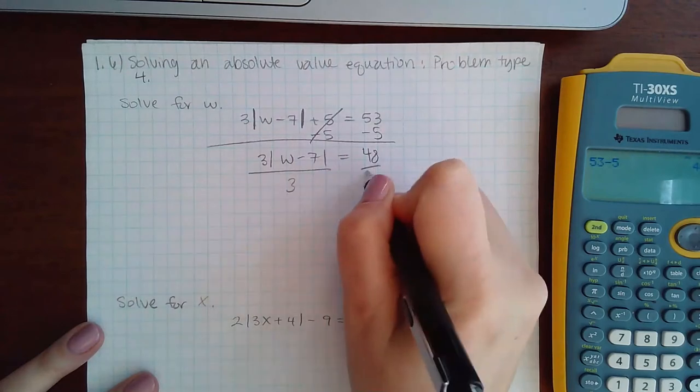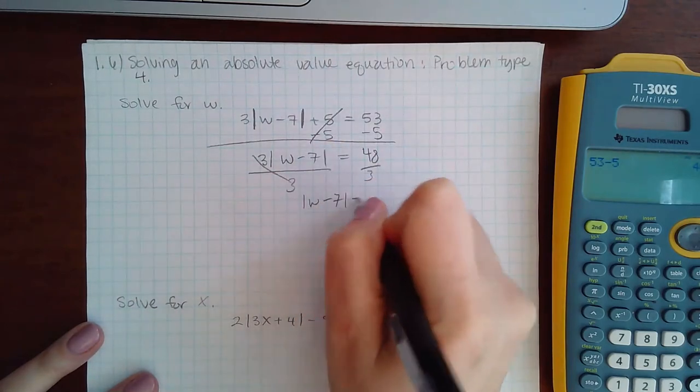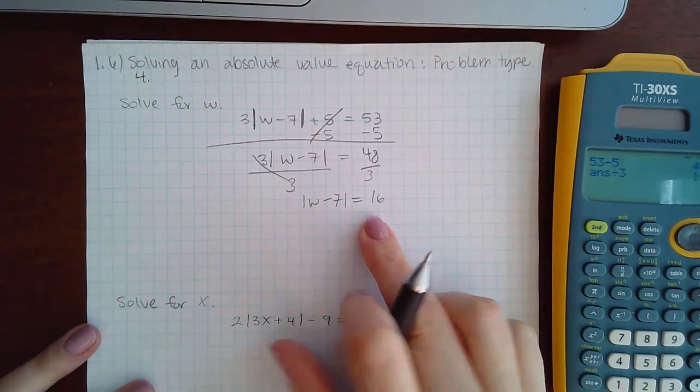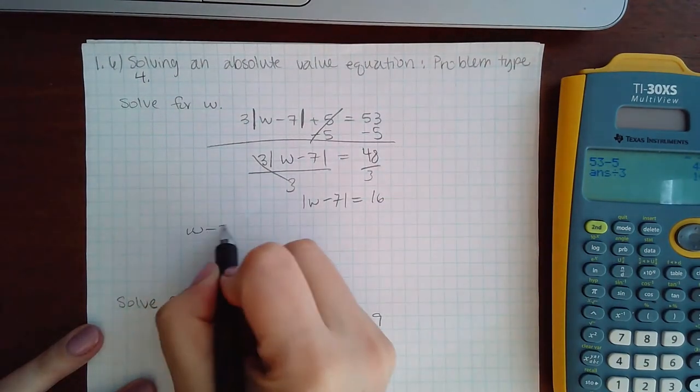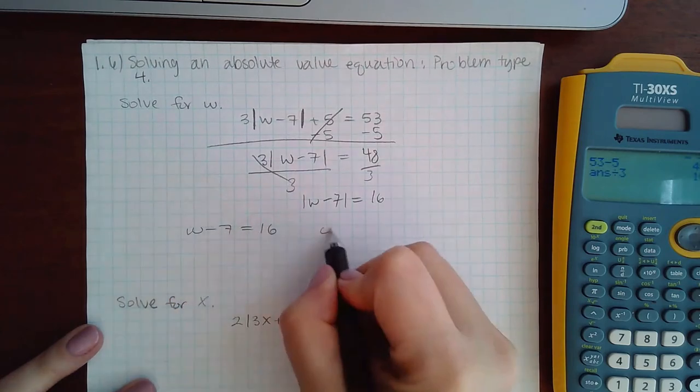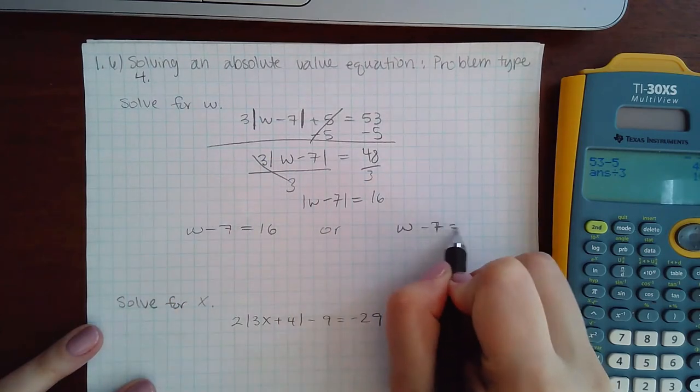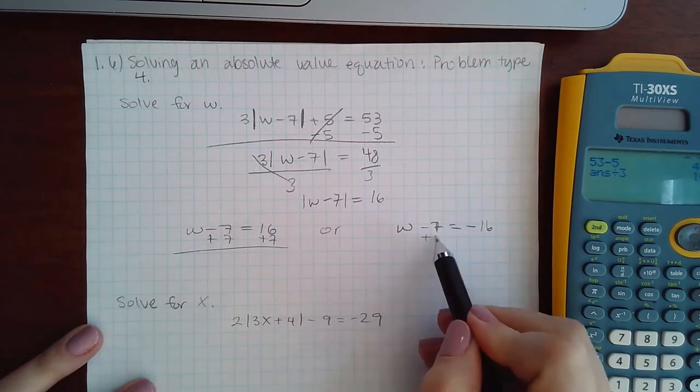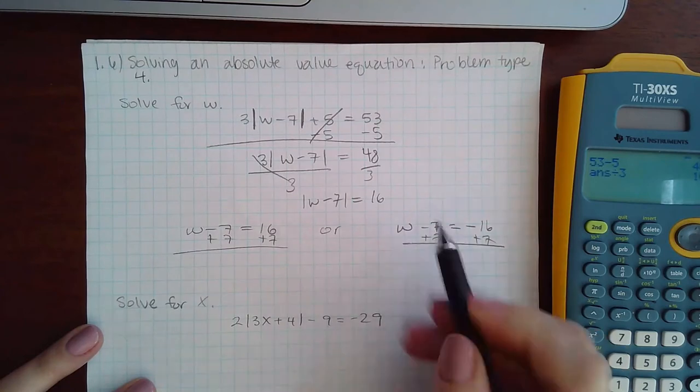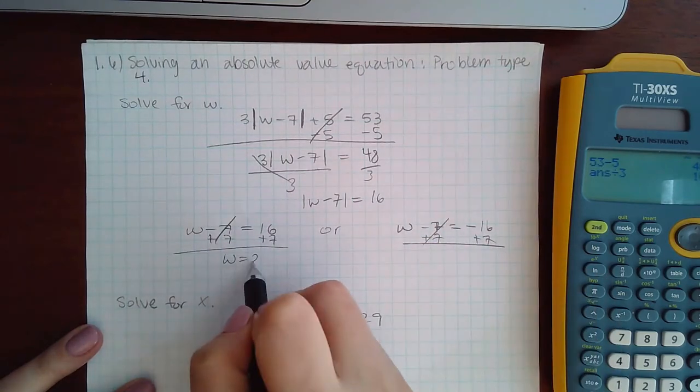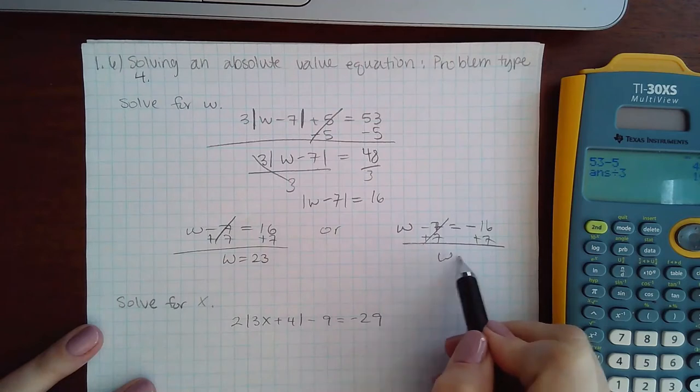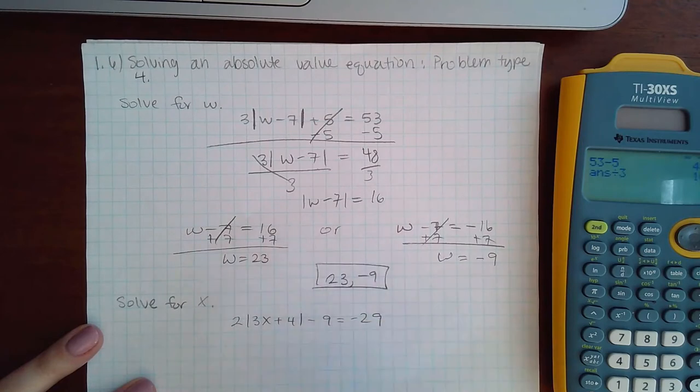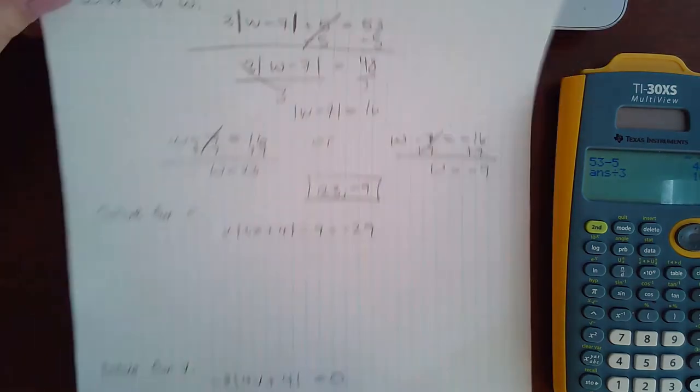Then divide both sides by 3. You get 16. That is a positive 16, so you get w minus 7 equal to positive 16 or w minus 7 equal to negative 16. Then add 7 on both sides to both equations and you get w equals 23 and w equals negative 9. So your two answers are 23 and negative 9. For the next example,